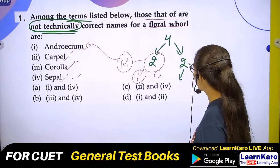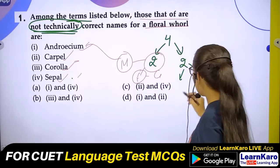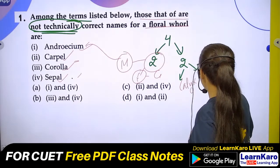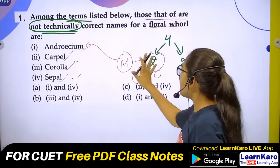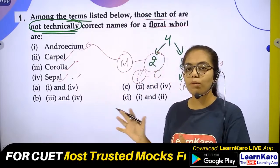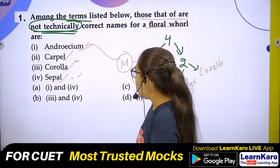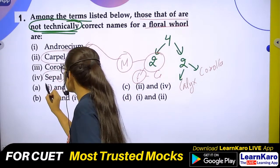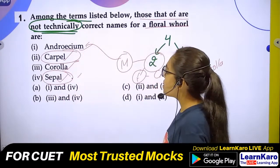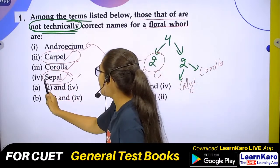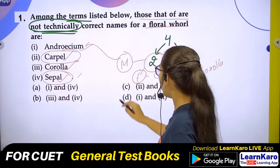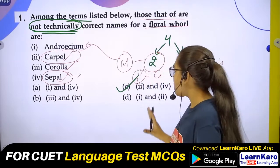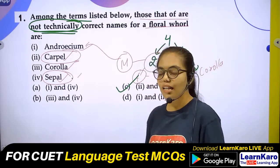The extra (accessory) parts are Corolla and the Androecium. Now, technically correct terms include Corolla. The option containing Carpel and Sepal as not technically correct: the correct answer is Option C.